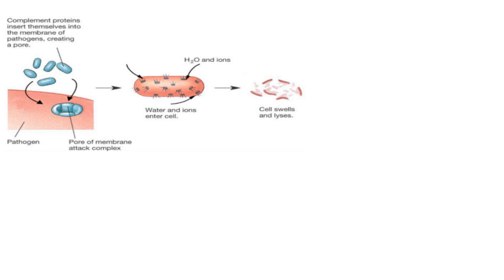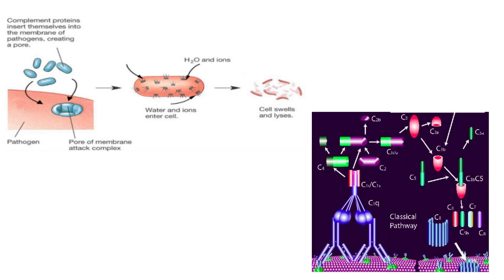Complement proteins become activated on microbial surfaces, enhancing their phagocytosis — which is like eating these pathogens — or leading to lysis, which is like cell death. Complement protein is a system consisting of more than 30 protein molecules and it is an integral part of the innate immune system.